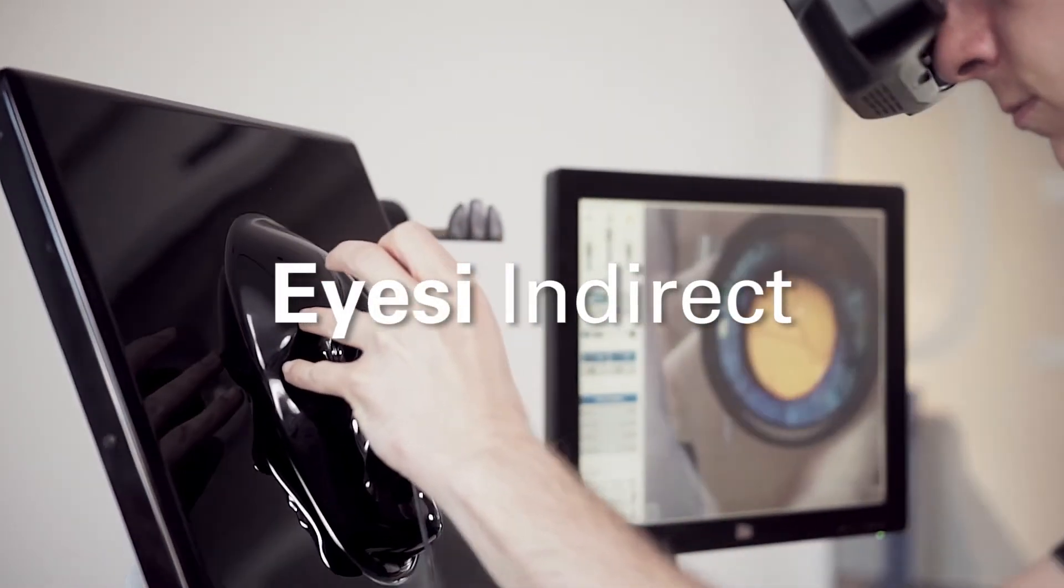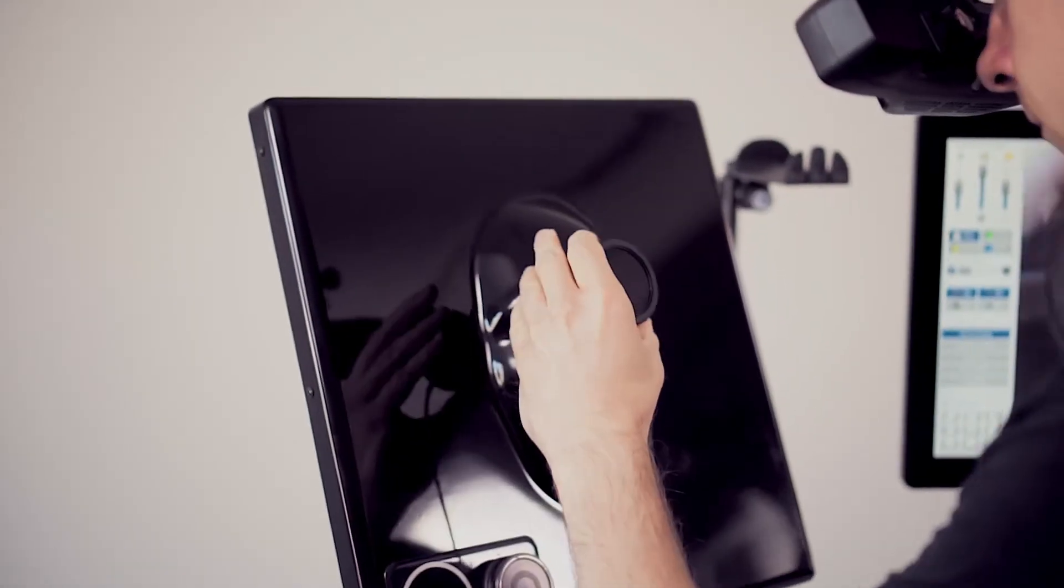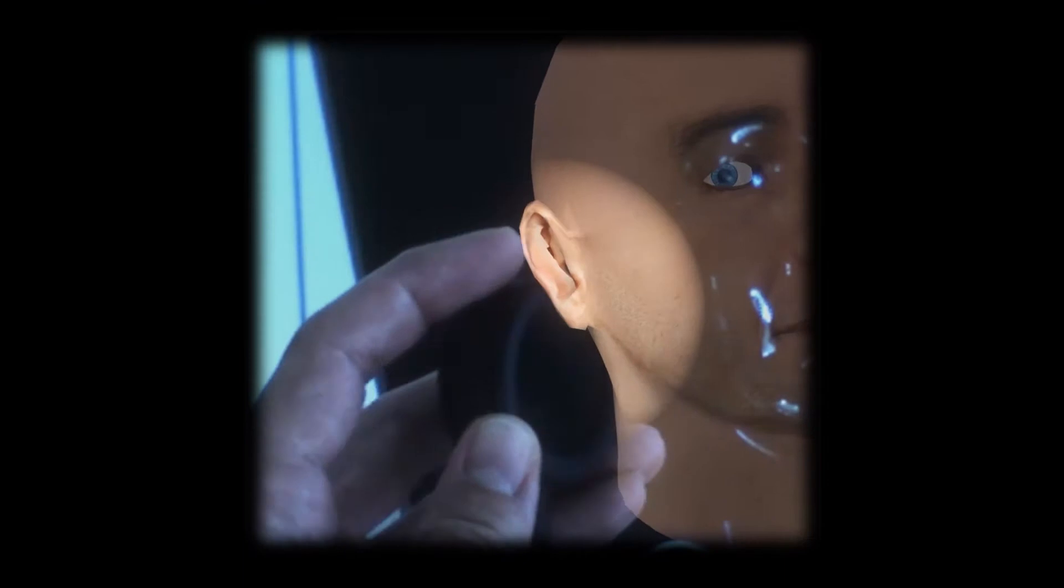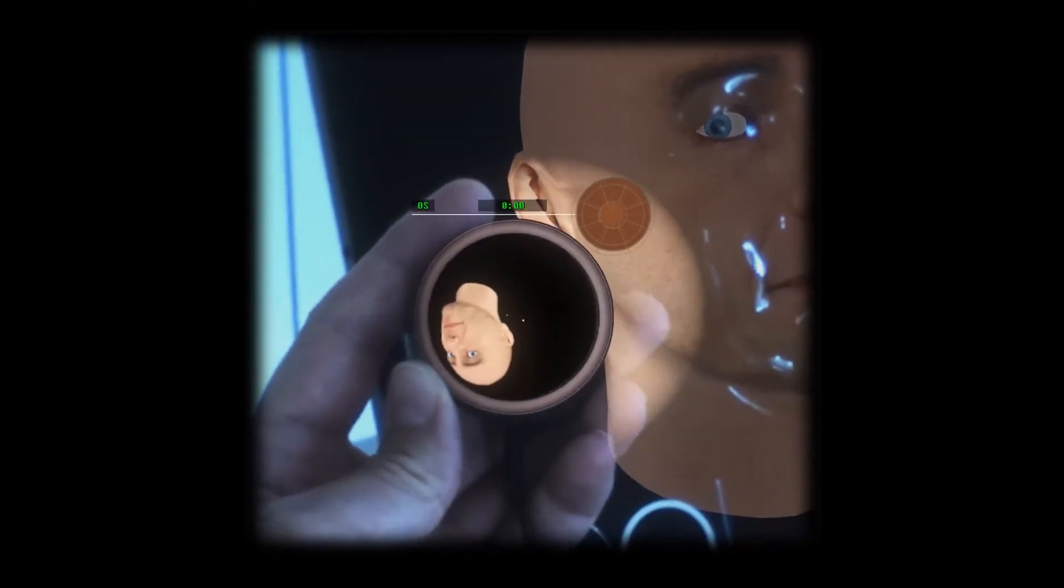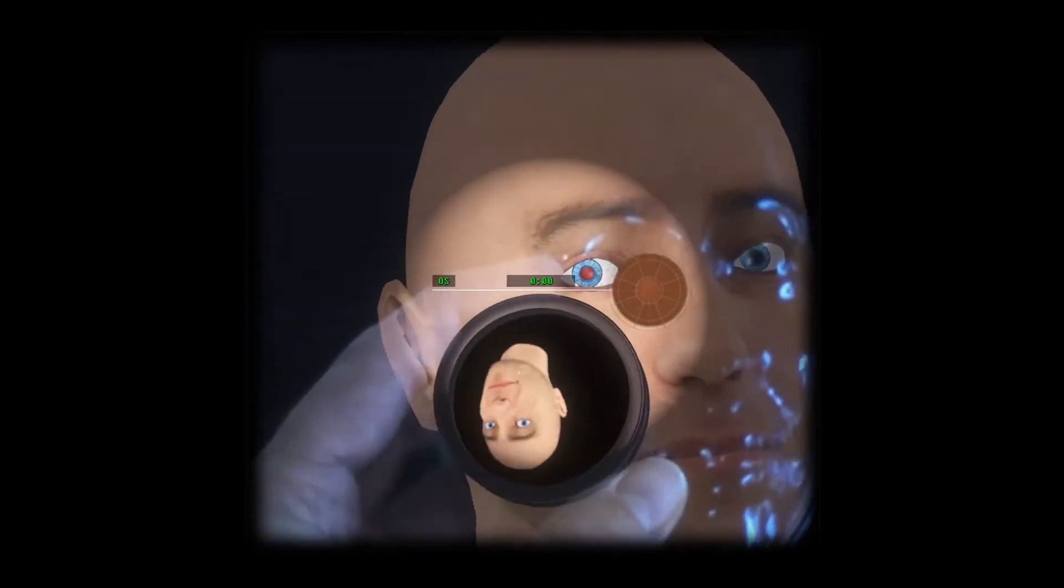IC Indirect is an augmented reality simulator for training of indirect ophthalmoscopy. Through the simulator's head-mounted display representing the ophthalmoscope hat, trainees see a three-dimensional virtual patient and their hand holding the virtual lens rendered into their view.